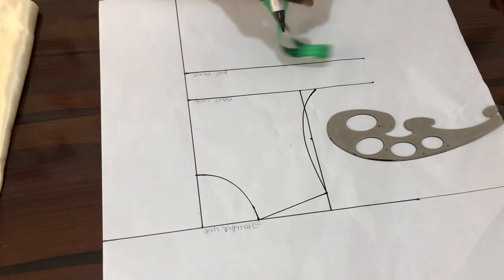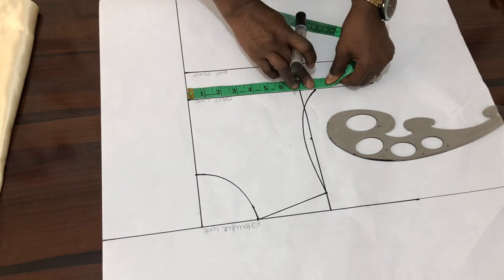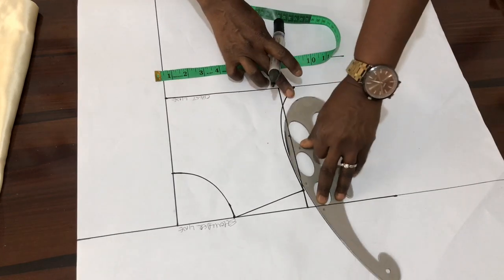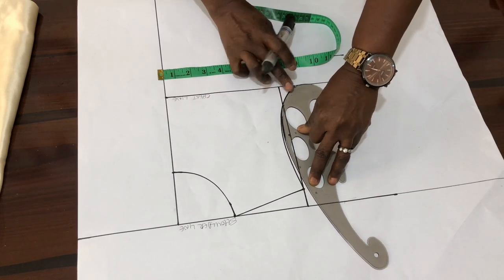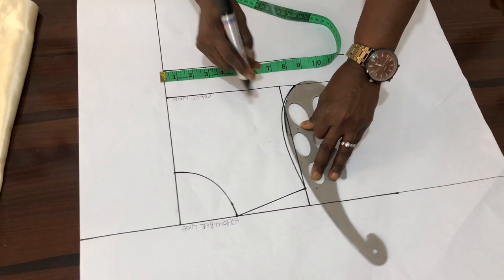The bust circumference we are working with is 32. We divide it by four, gives us eight inches. We measure it. Then, we connect with our french cuff to create our armhole cuff, just the way you see it.